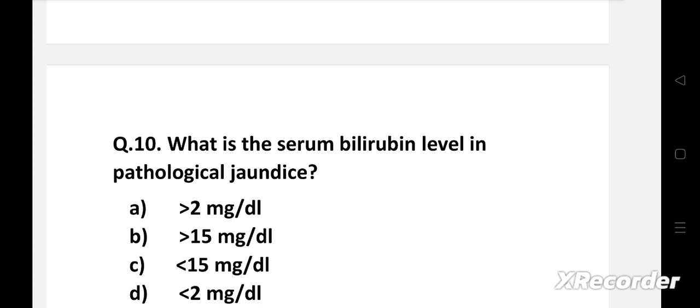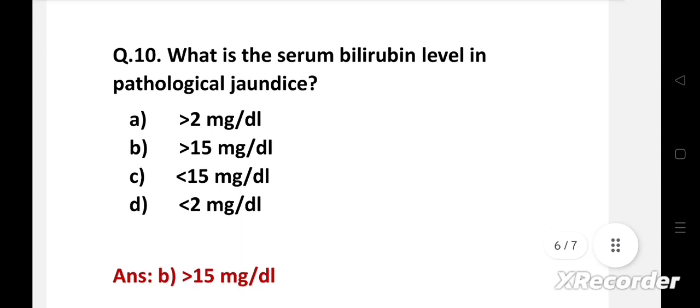What is the serum bilirubin level in pathological jaundice? Option A greater than 2 mg per dL, B greater than 15 mg per dL, C less than 15 mg per dL, D less than 2 mg per dL. Right answer is option B, greater than 15 mg per dL. The serum bilirubin level in pathological jaundice is greater than 15 mg per dL.